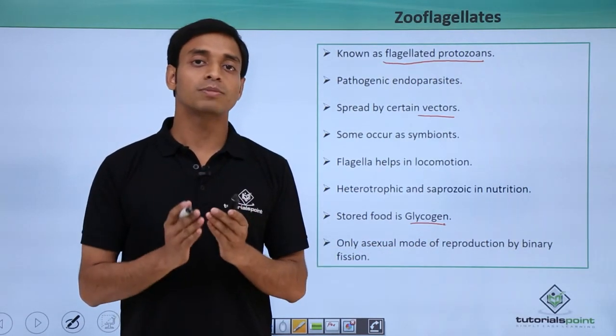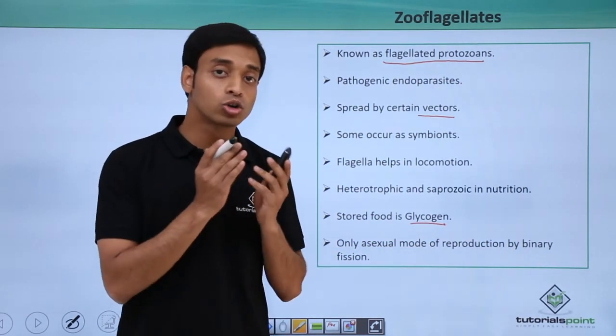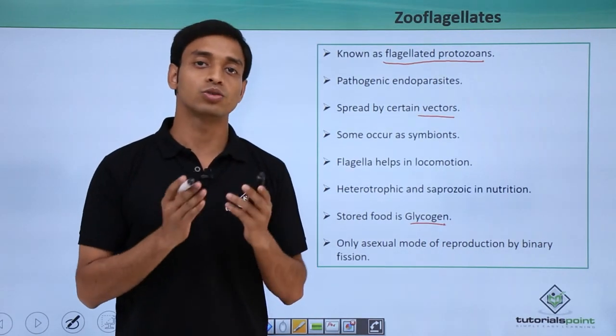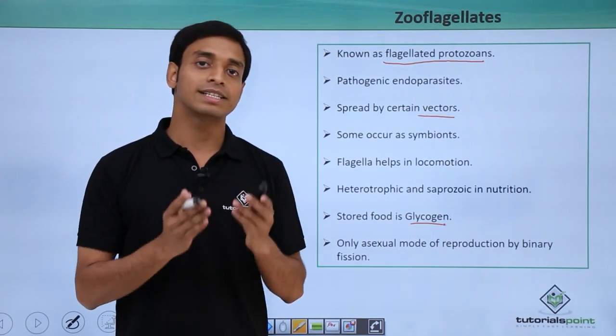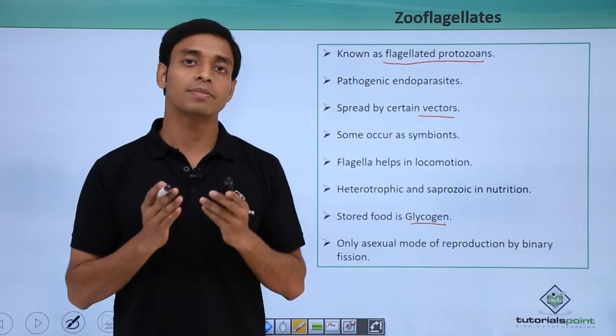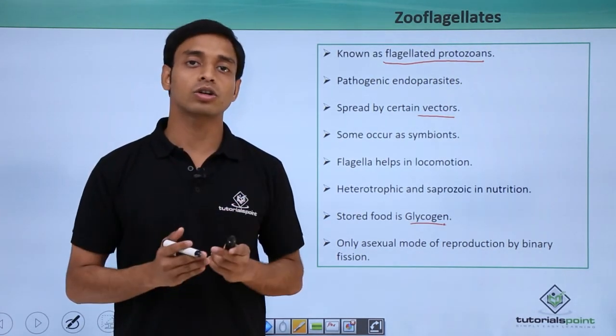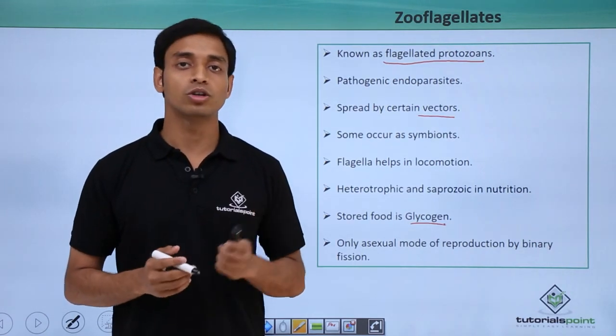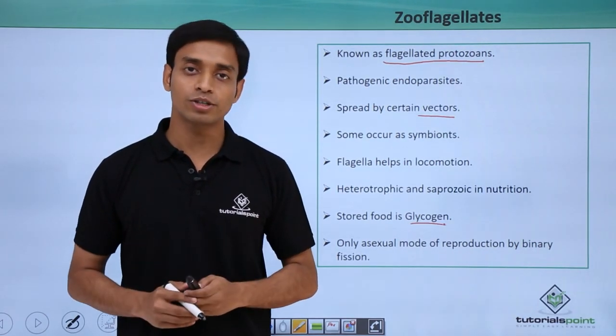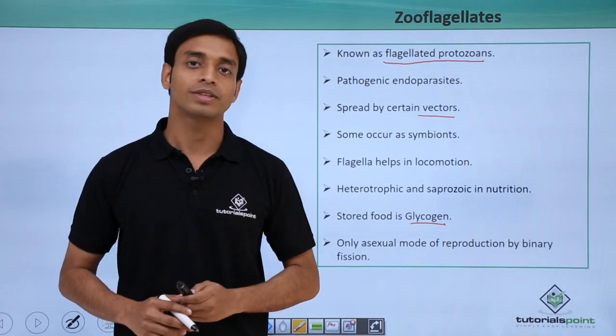In this video we have talked about the first type or group of protozoans which are known as zooflagellates. We have discussed that these are known as zooflagellates because of the presence of the locomotory organ flagella, and we have also talked about the different characteristics of this group of zooflagellates. I hope you have understood and liked this video. Thank you.